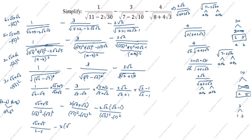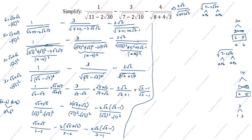Simplifying the denominators: 6 minus 5 is 1, 5 minus 2 is 3, and 3 minus 1 is 2. The factor of 3 and 3 cancel, and the factor of 2 and 2 cancel. So we get: (root 6 plus root 5) minus (root 5 plus root 2) minus root 2 times (root 3 minus 1).